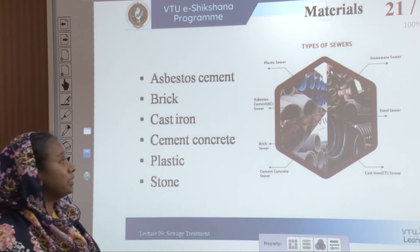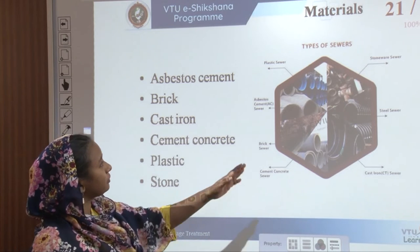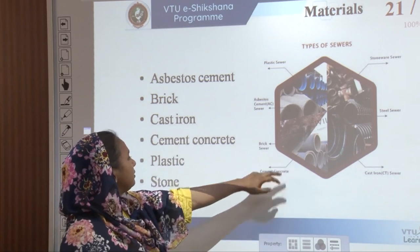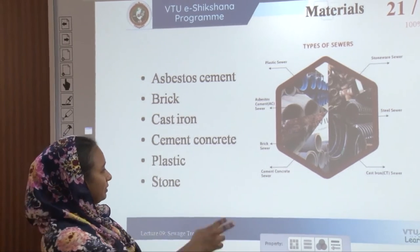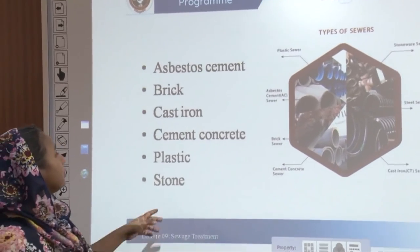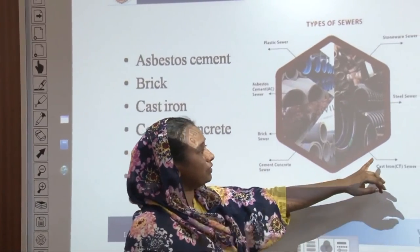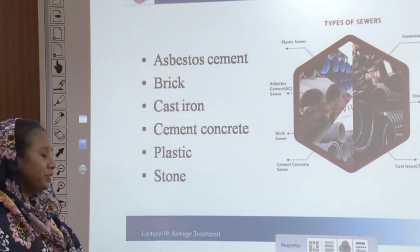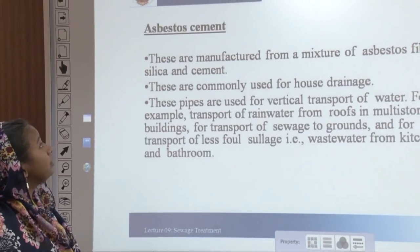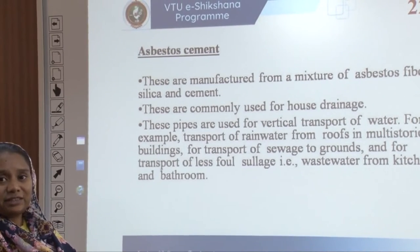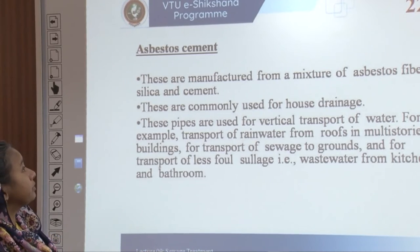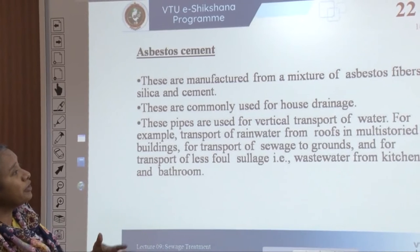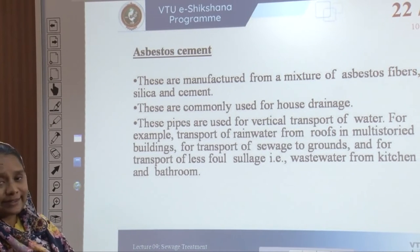Various sewer materials available in the market include asbestos, brick, cement, plastic, stone, steel, and cast iron sewers. For asbestos cement pipelines, these are manufactured with a mixture of asbestos fibers, silica, and cement. They are commonly used for house drainage, vertical transport of water such as rainwater from roofs in multi-storied buildings, transport of sewage to grounds, and transport of less foul waste water from the kitchen and bathroom.